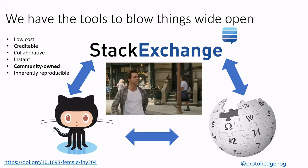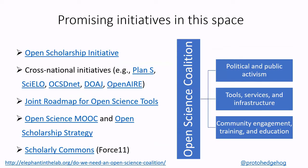This is what one of the fundamental goals of the Open Scholarship Movement should be. There are a lot of promising initiatives in this space. The Open Scholarship Initiative is a cross-stakeholder engagement forum. There are cross-national initiatives such as Plan S, Cielo in Latin America, Open AIRe in Europe, DOHA all around the world. And there's the Joint Roadmap for Open Science Tools — about bringing together different tools and services within the Open Scholarship space and connecting them to improve research workflows and create Open Scholarship infrastructure.